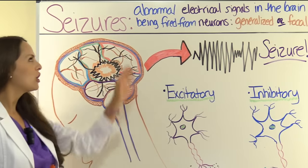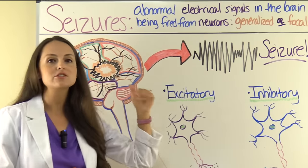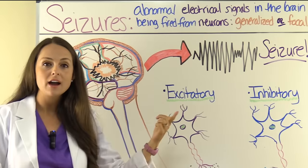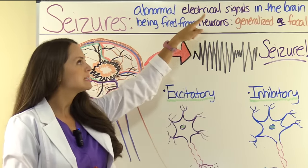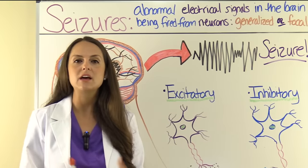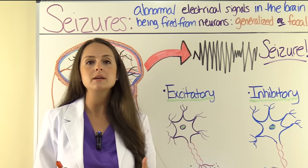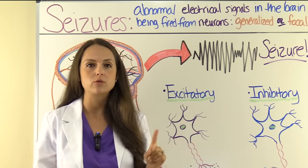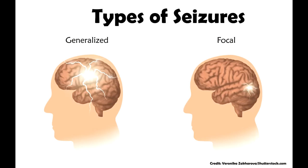What are seizures? They occur when abnormal electrical signals are being fired rapidly from neurons in the brain. We have various types of seizures, but you can really put them in two categories: generalized seizures, which affect both sides of the brain, or focal seizures, also known as partial seizures, which affect a specific area of the brain.